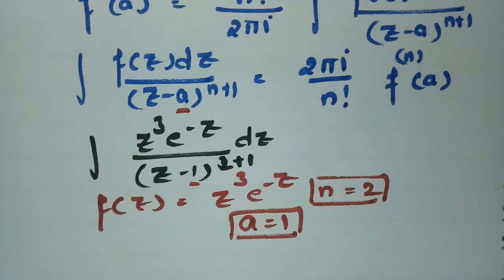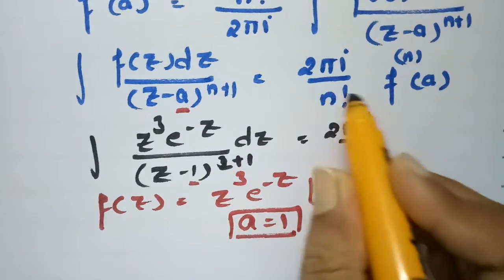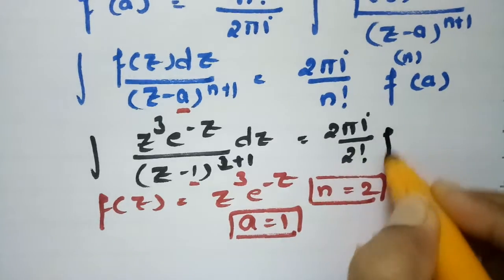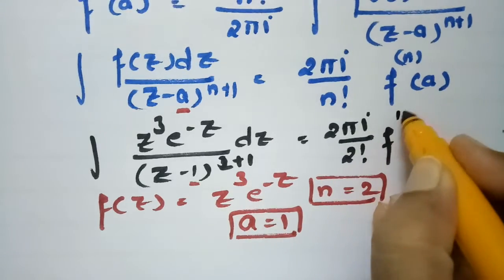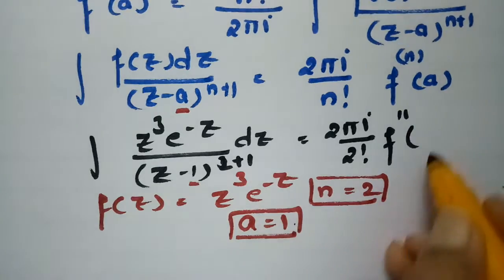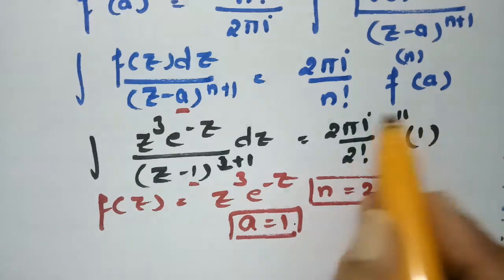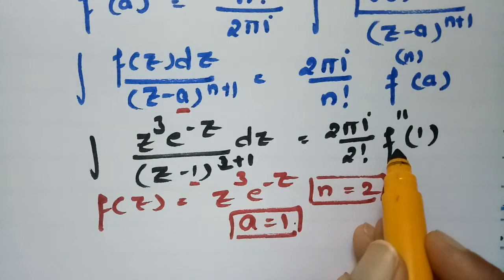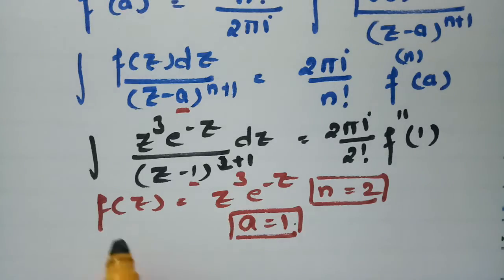Substituting into the formula, the integral becomes 2πi divided by 2 factorial, times f double-dash at point 1 — that is, the second derivative of f(z) evaluated at z equals 1. So to find this integral we need to compute f''(1). Let's get started.